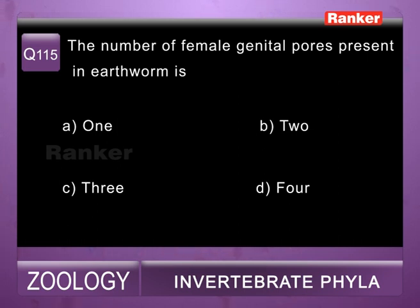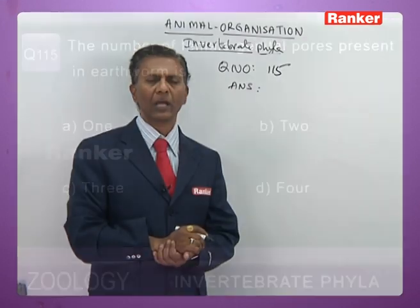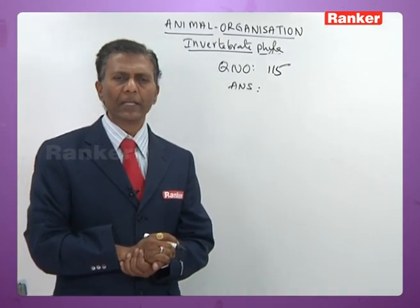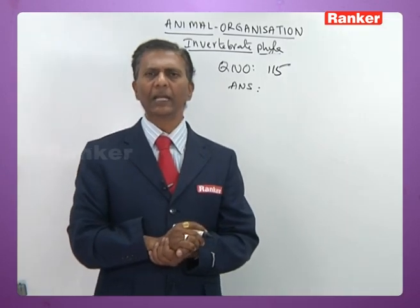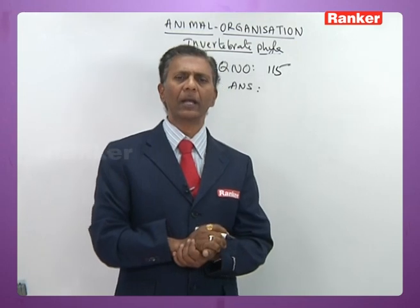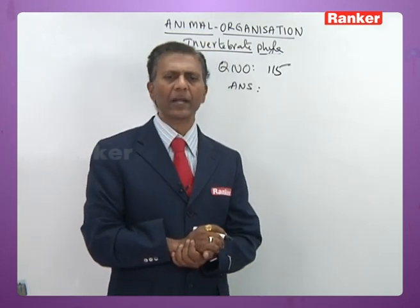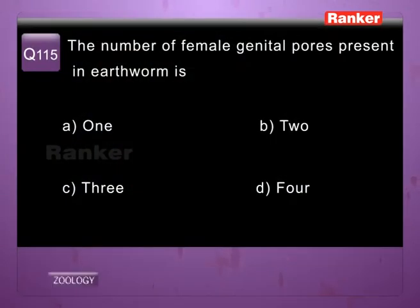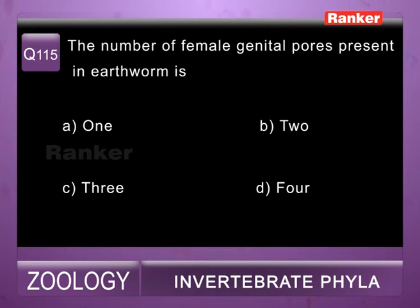Question 115: number of female genital pores present in Pheretima — a) 1, b) 2, c) 3, d) 4. In Pheretima posthuma, the female genital pore is single and lies mid-ventrally in segment 14. So 115th question correct answer is a) 1.